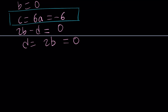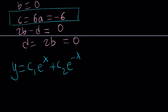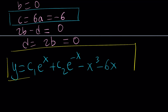Our general solution was y equals c sub 1 e to the x plus c sub 2 e to the negative x plus ax cubed plus bx squared plus cx plus d. Substituting the values: a is negative 1, b is 0, c is negative 6, and d is 0, the solution becomes y equals c sub 1 e to the x plus c sub 2 e to the negative x minus x cubed minus 6x. You can plug this back in to verify. We were expecting a cubic and got one, with a linear term added as well.